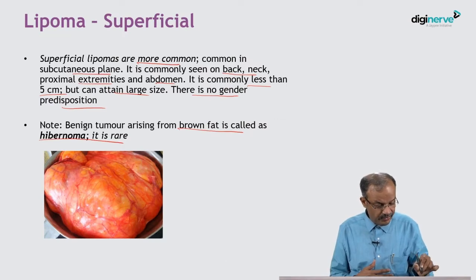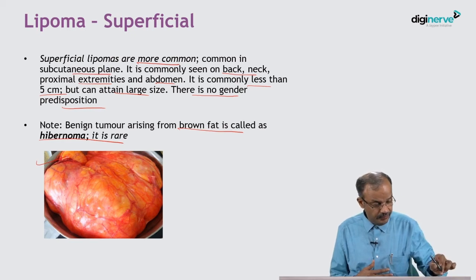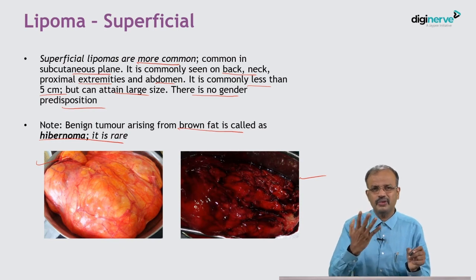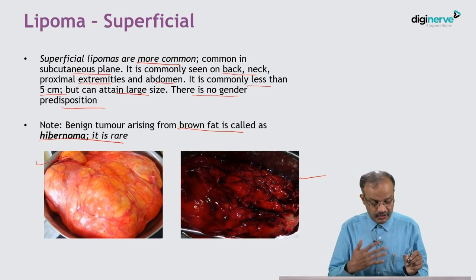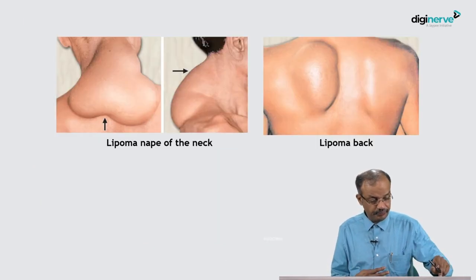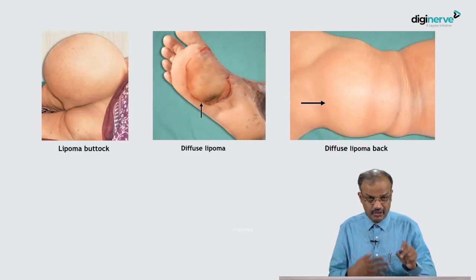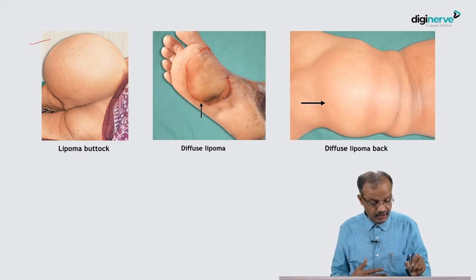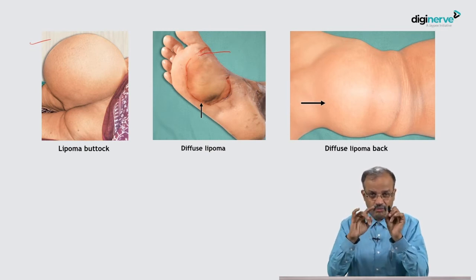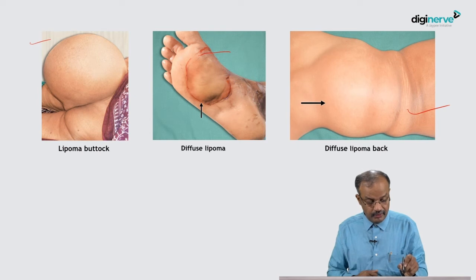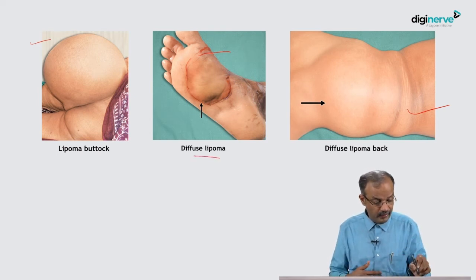Here is a typical look — an encapsulated large lipoma. Hibernoma is very rare; having done hundreds of lipoma surgeries, I may have seen only one or two hibernoma cases. This one is in the nape of the neck, one of the common sites for large lipoma. In the back it is also quite common. This is the diffuse lipoma — there is no proper capsule, the margin is not well defined, it is ill-defined. Back and palm/sole are the common sites for diffuse lipoma.